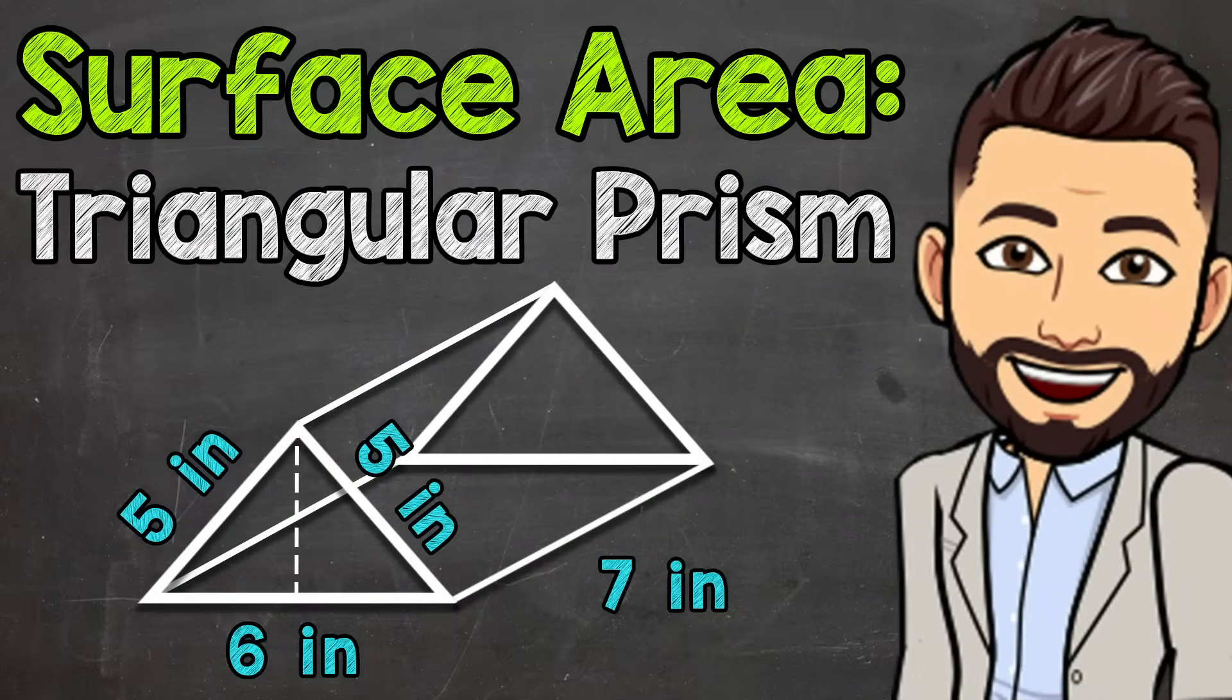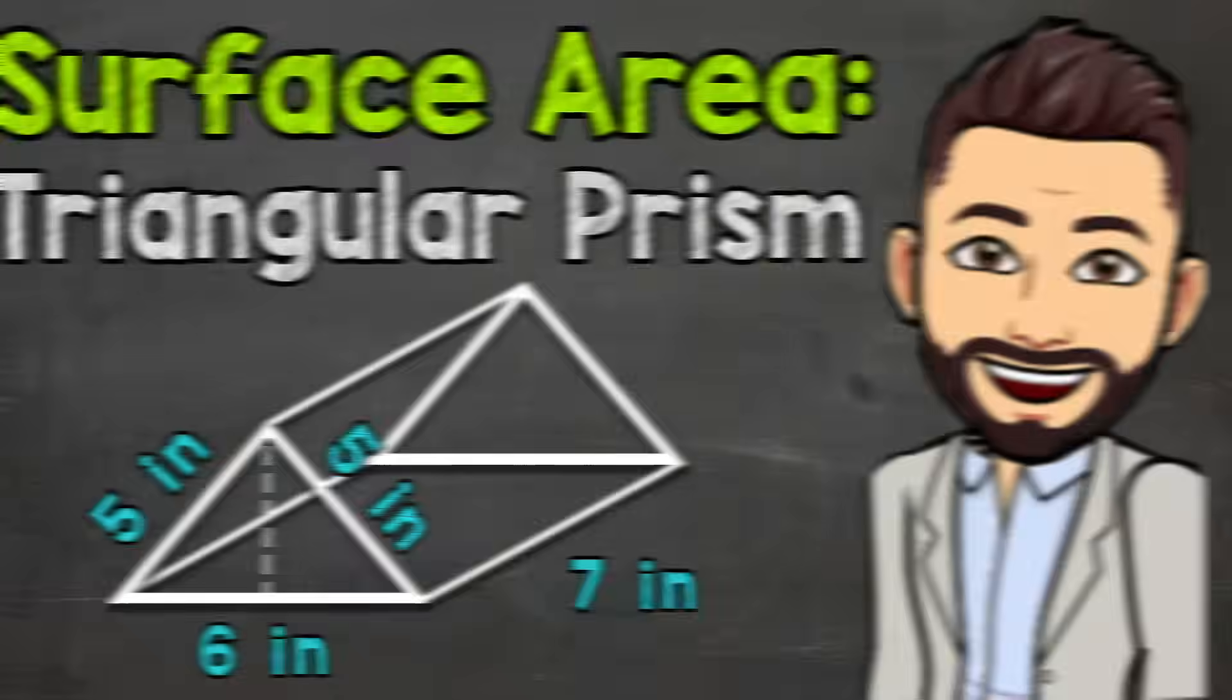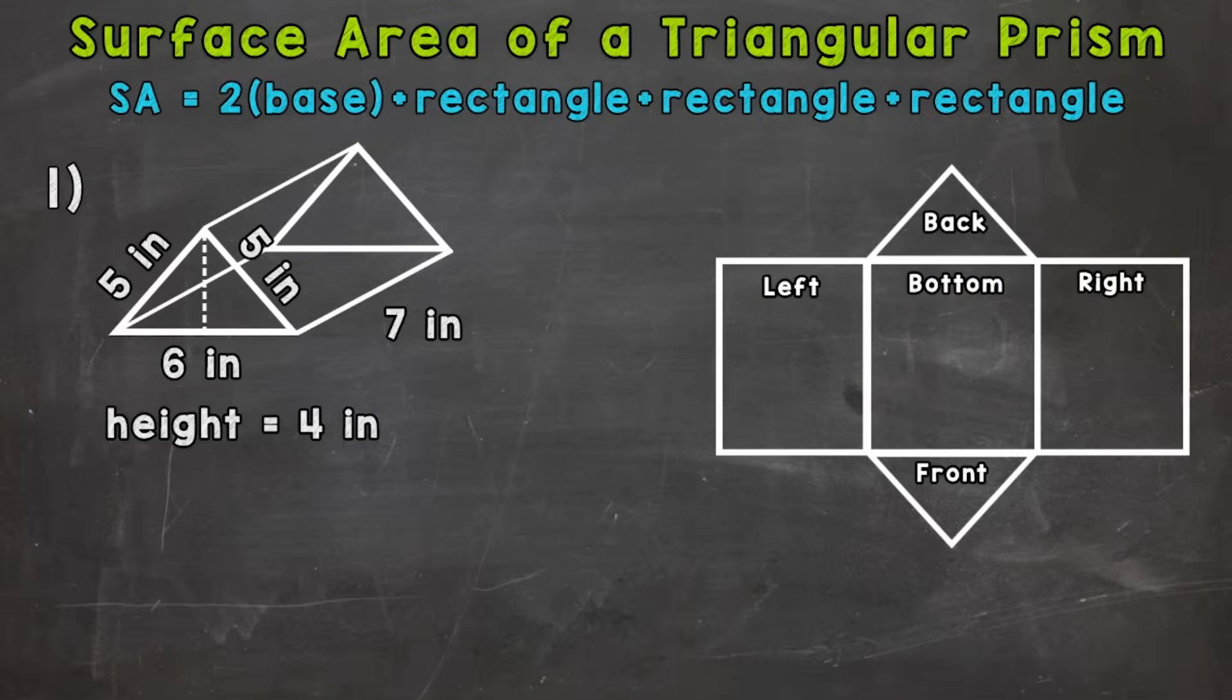Welcome to Math with Mr. J. In this video, I'm going to cover how to find the surface area of a triangular prism. Remember, the surface area, simply put, is the area of the outside part or layer of a 3D figure. And when it comes to triangular prisms, they have five faces.